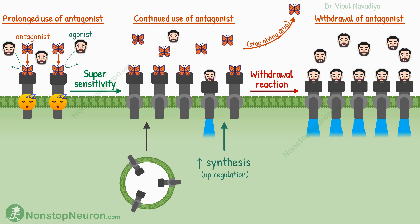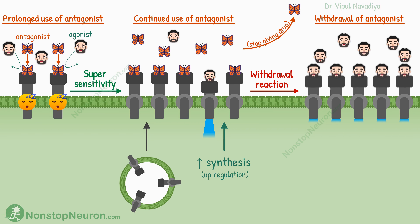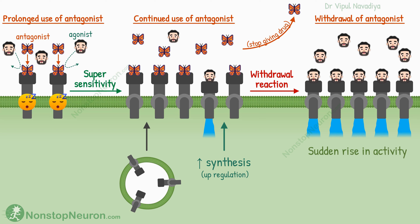Supersensitivity can sometimes create a problem called withdrawal reaction. If you continue to give an antagonist after supersensitivity, most of the extra receptors stay inactive under its influence. But if you suddenly stop giving the drug, the agonist will now have a huge number of receptors to work on, causing a sudden rise in cell activity. For example, prolonged use of beta blockers in angina patients causes supersensitivity of beta receptors. If beta blockers are abruptly withdrawn, there will be a sudden increase in noradrenaline activity, and the resultant increase in heart activity can even precipitate a heart attack.